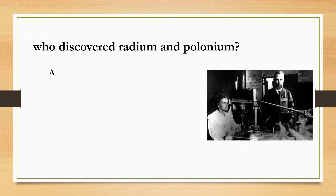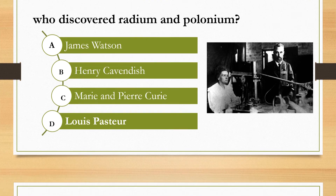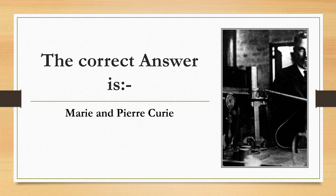Who discovered radium and polonium? There are four options. A. James Watson. B. Henry Cavendish. C. Marie and Pierre Curie. D. Louis Pasteur. The correct answer is Marie and Pierre Curie.